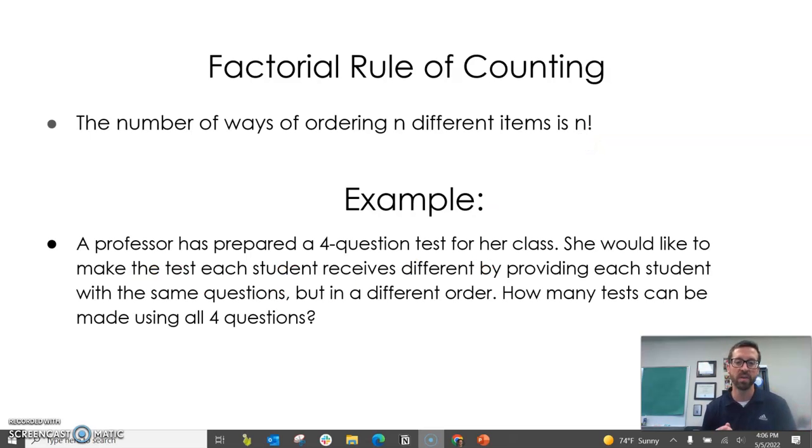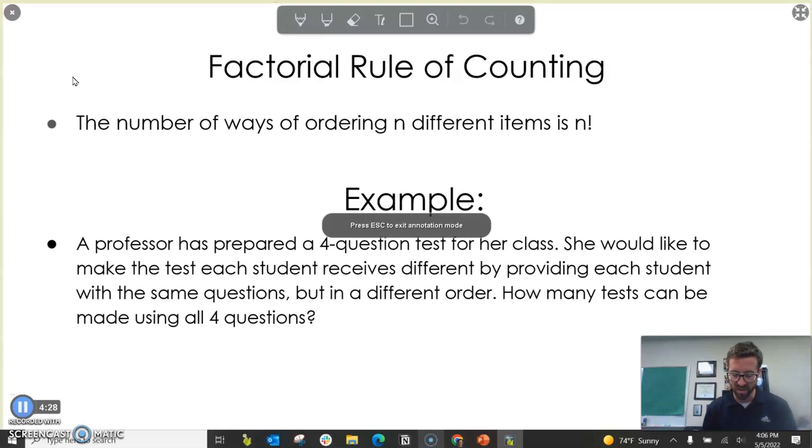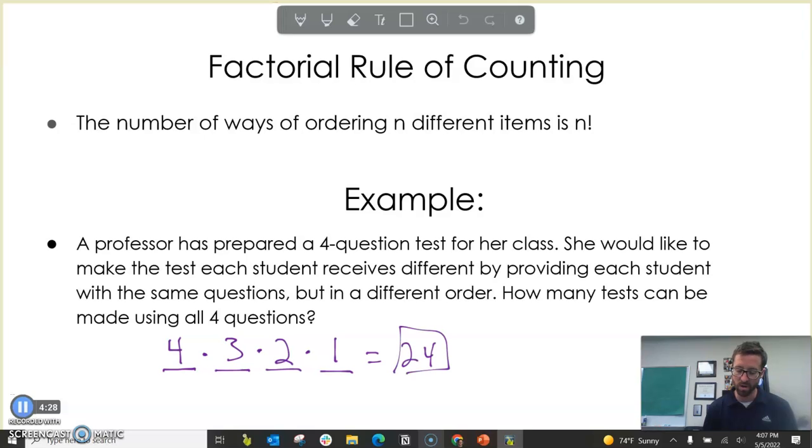Here's my next example. A professor has prepared a four-question test for her class. She would like to make the test each student receives different by providing the students with the same questions, but in a different order. How many tests can be made using these same four questions? Once again, with the same idea, how many question options do we have for question one? Any of our four questions could go there. But then from our second question on the test, there's only three options because you've already got one of the questions there. Then there's two, and then there's one. So if I multiply all these together, you get 24. And another way of writing this is I could have just said four factorial. This is that factorial rule of counting.